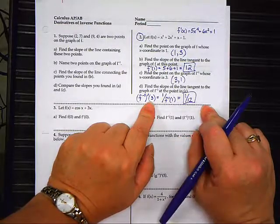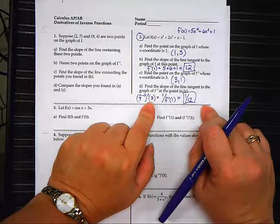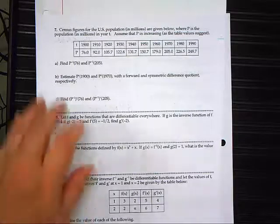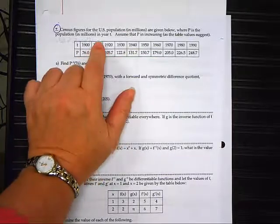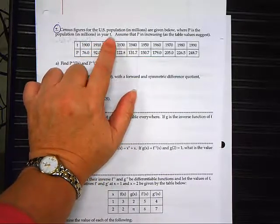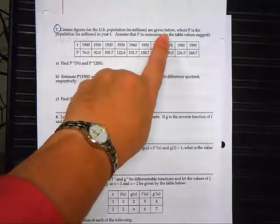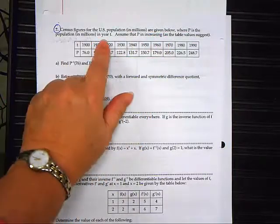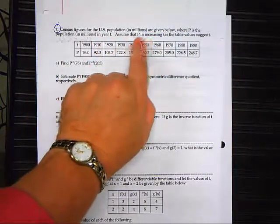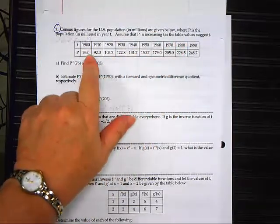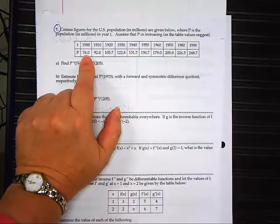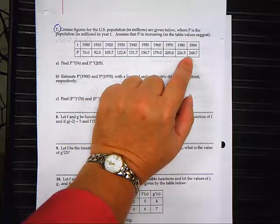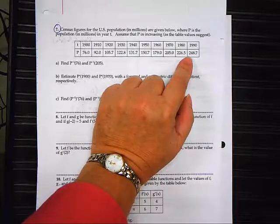Any questions before I move on to the next part? Turn over on the back, please. We're going to do number 7. Number 7 says census figures for the U.S. population in millions are given below, where P is the population in millions in year T. Assume that P is increasing as the table values suggest. So basically, in 1900, there were 76 million people in the United States. In 1990, there were almost 250 million people in the United States.